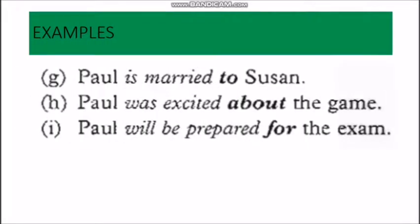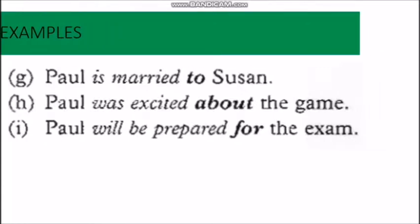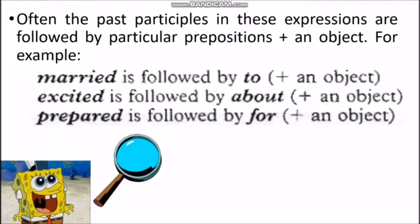So in this case we are using the past participle as adjective, we are using the prepositions to, about, and for, and we are using the objects — in this case Susan, the game, and the exam. The structure is: past participle verb, then a preposition, then an object. This gives more meaning to the sentences.